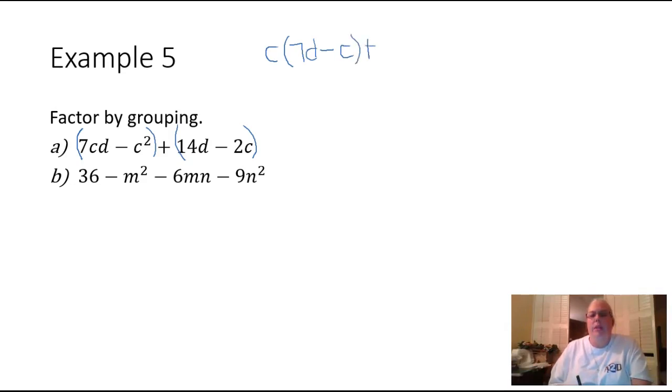In the second parentheses, I'm looking for a number that can go into both 14 and 2, the biggest number, and that's going to be a 2. And I see that this has a D and this has a C, so they don't have anything else in common. So 2 goes into 14 seven times, and then 2 goes into 2 one time, and then there's that C over there.